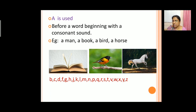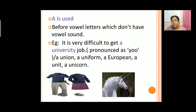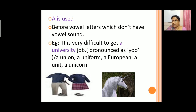We know what the consonants are. 'A' is also used before vowel letters which don't have a vowel sound. The vowels are a, e, i, o, u — these five letters are the vowels. So 'a' is used before vowel letters which don't have a vowel sound, meaning the sound is not a vowel sound. So there we use 'a'.